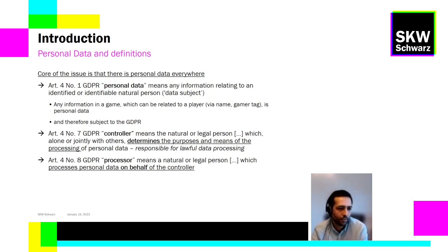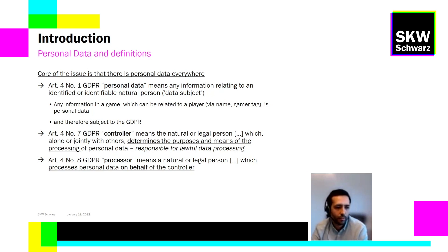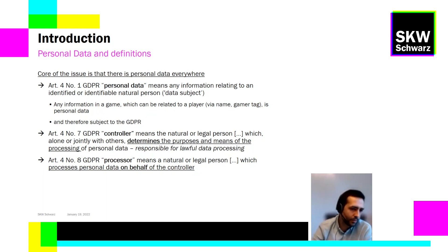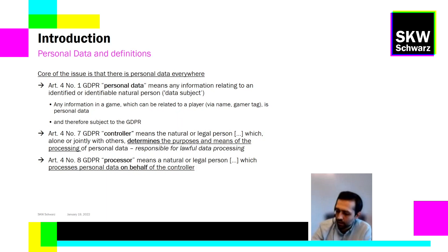Two very important terms about data protection responsibilities. The controller means any natural or legal person which alone or jointly with others determines the purposes and means of the processing of personal data. The controller is responsible for lawful data processing and must be identified immediately. And then we have the processor — a natural or legal person which processes data on behalf of the controller. The processor is mostly doing technical work and does not determine any purpose or means.